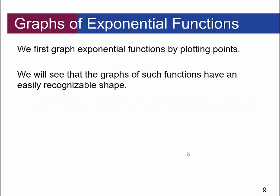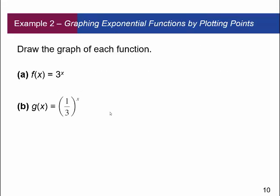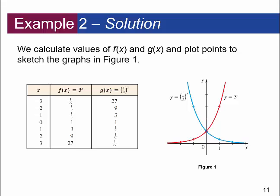How do we graph these functions? We first graph exponential functions by plotting points, and we'll see that these graphs have an easily recognizable shape. Let's graph f of x equal to 3 to the x and g of x equal to one-third to the x. You pick some values of x and plug them into both functions. For example, plugging in negative 3 gives 3 to the negative 3 which is 1 over 27. The graph of y equal to 3 to the x increases without bound, while both graphs have a horizontal asymptote at the x-axis. You could obtain the graph of g from f by reflecting it in the y-axis — that's why these graphs are reflections of each other.